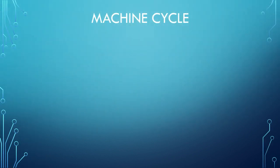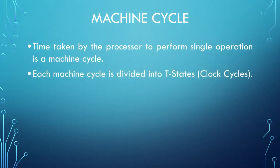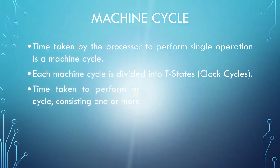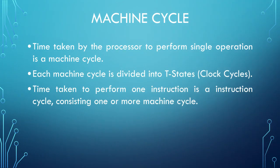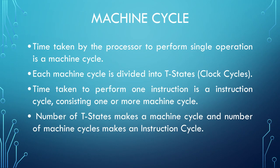What is a machine cycle? It basically is the time taken by the processor to perform a single operation. Each machine cycle is divided into T states or clock cycles. Similarly, time taken by the processor to perform one instruction is called an instruction cycle. Instruction cycle consists of one or more machine cycles. So we have a number of T states which make a machine cycle, and a number of machine cycles making an instruction cycle.